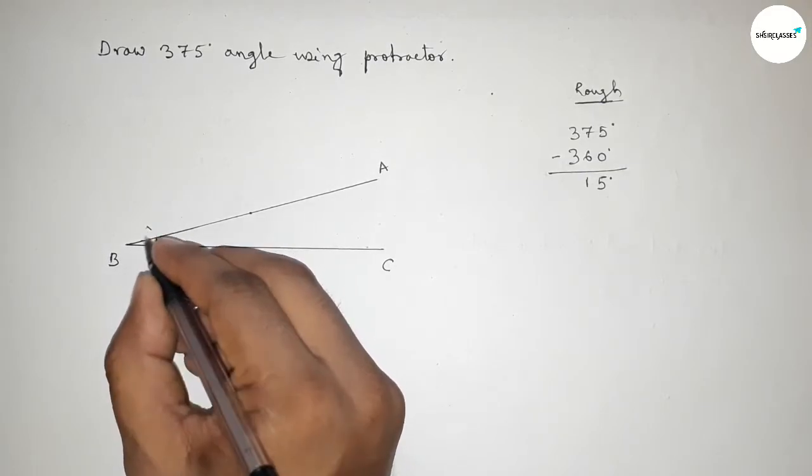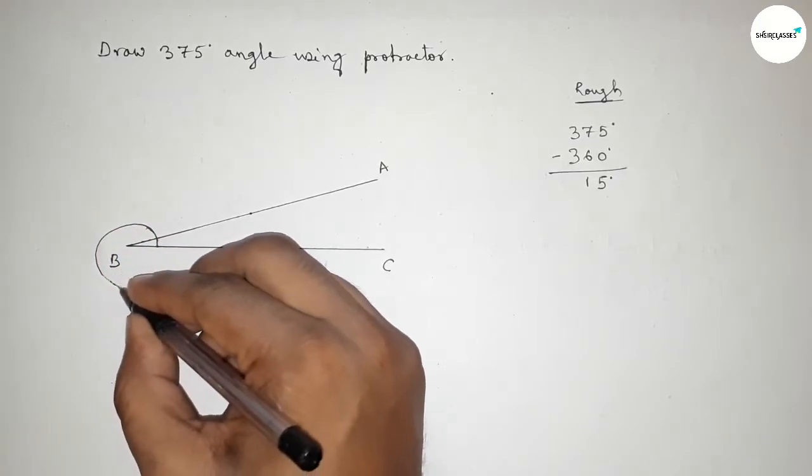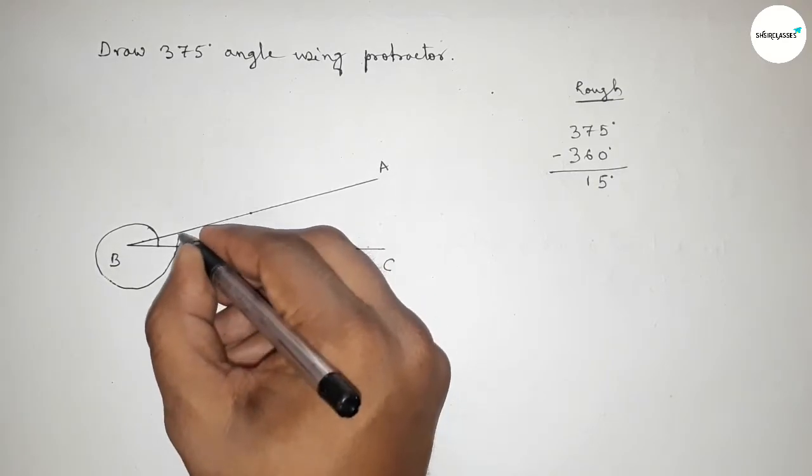From the line BC to AB, and this represents the total angle of 375 degrees. So that's all.